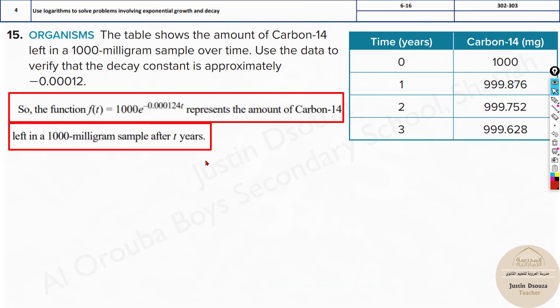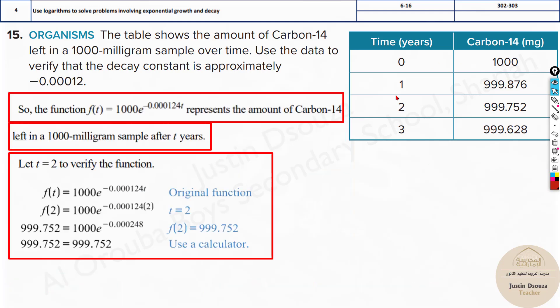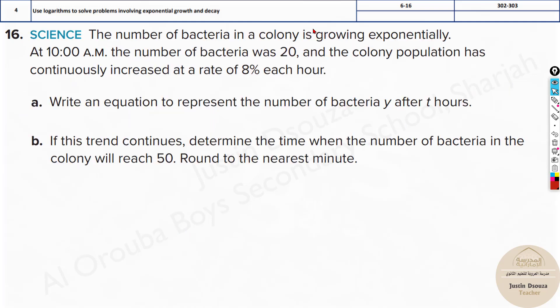I will show you. You can just choose any time. We have taken time T equals 2 and just substitute in the growth equation as T equals 2. What is the answer you're getting? 999.752. Yes, this is true. Obviously it's true because we use this table to verify it, and it's corresponding to this itself. So that's how we solve it.